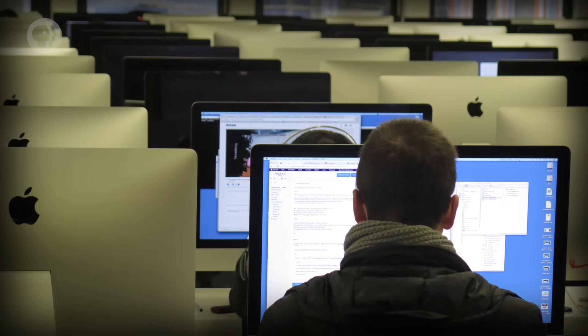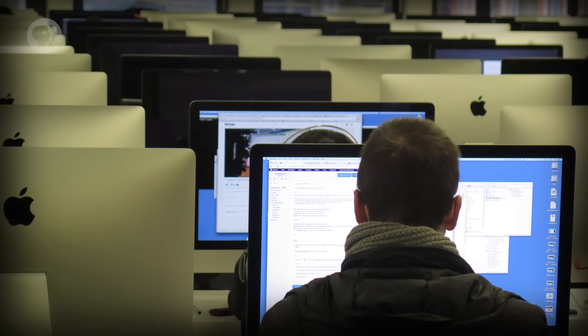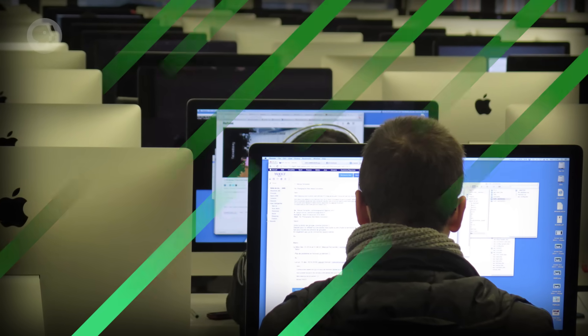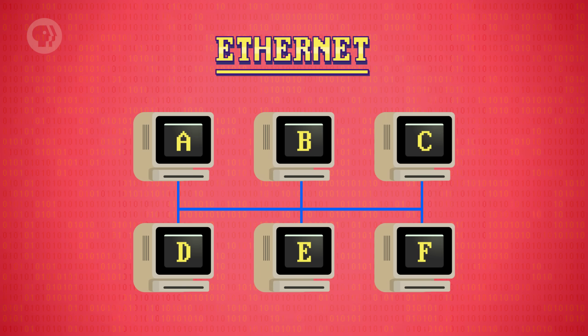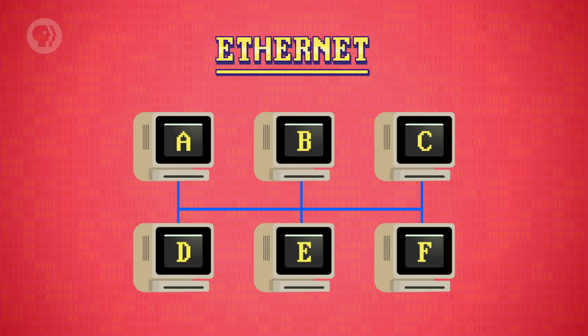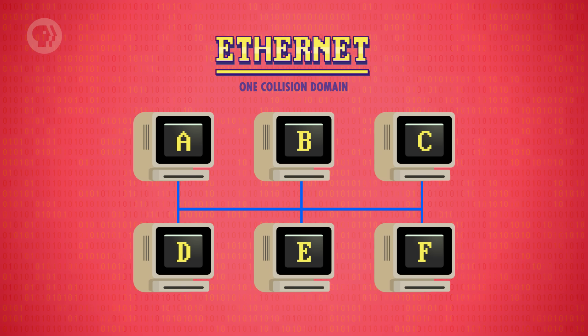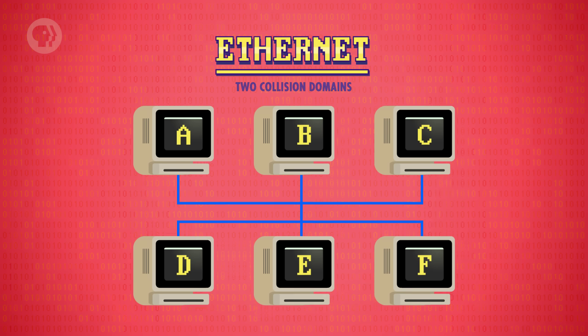But even with clever tricks like exponential back-off, you can never have an entire university's worth of computers on one shared Ethernet cable. To reduce collisions and improve efficiency, we need to shrink the number of devices on any given shared carrier — what's called the collision domain. Going back to our earlier Ethernet example, where we had six computers on one shared cable — one collision domain — to reduce the likelihood of collisions, we can break this network into two collision domains by using a network switch.